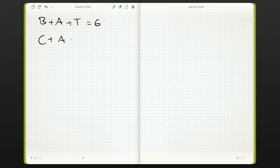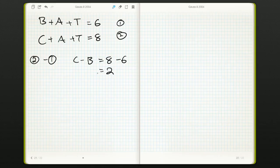We also know that cat gives us 8. Now, the difference between these two equations, if I had equation 2 minus equation 1, the A's are going to cancel out. The T's are going to cancel out. We're going to be left with C minus B is the same as 8 minus 6, which is 2. So, whatever C is, it's B plus 2. So, if B were 0, C would be 2, that sort of thing.